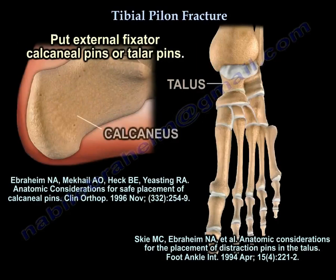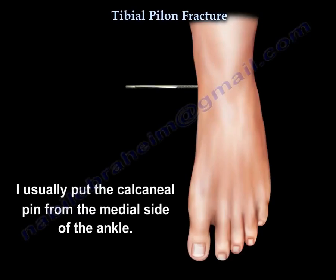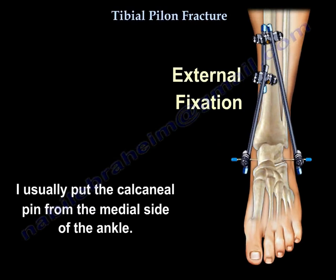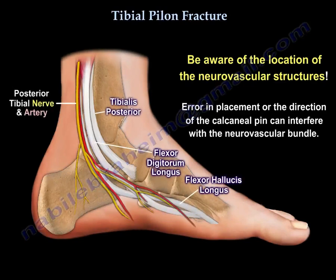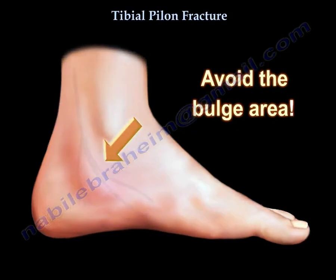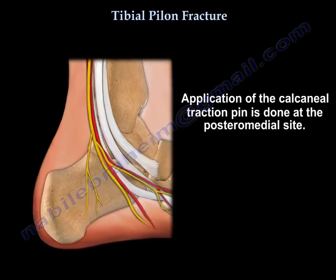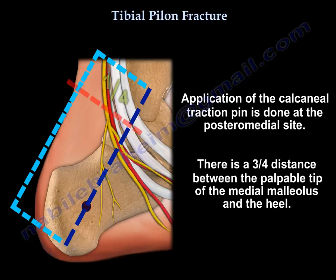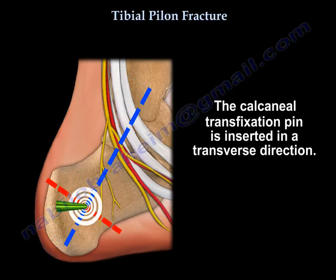When using an external fixator around the ankle, you can put the pins in the calcaneus or in the talus. I usually put the calcaneal pin from the medial side of the ankle. Be aware of the location of the neurovascular structures — try to avoid the bulge area because it contains neurovascular structures. I usually place it at the posterior medial area as outlined here, inserting the pin in a transverse direction.